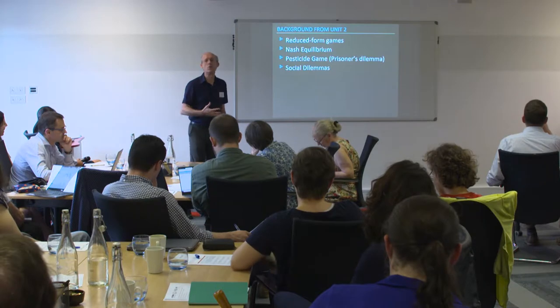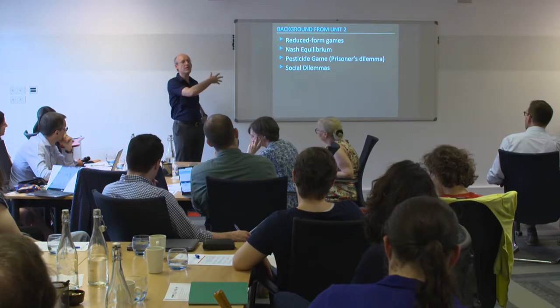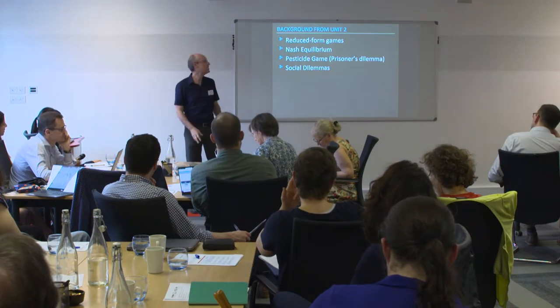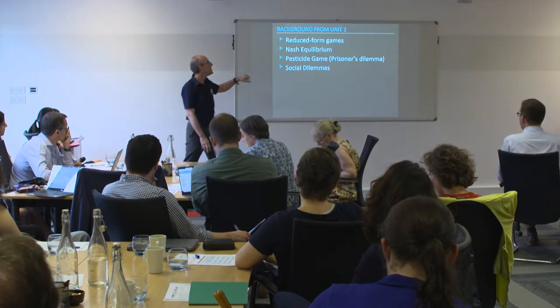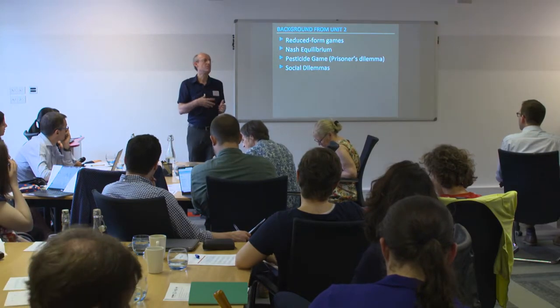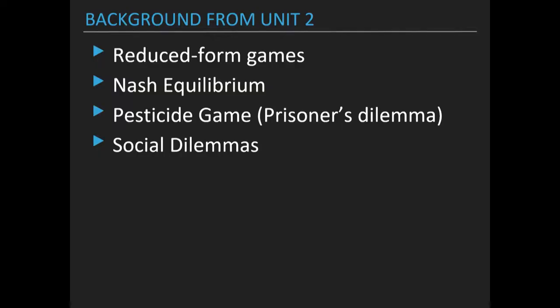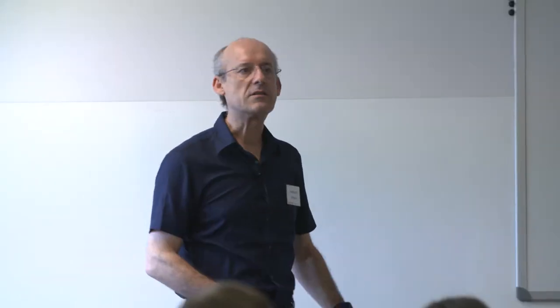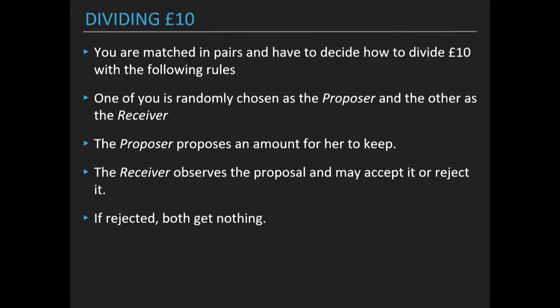This is chapter three, so we need to know where we are in the course. Students already have some background: they have learned about reduced form games, the concept of Nash equilibrium, and they have played a particular story behind the prisoner's dilemma — the pesticide game. They know the problem with social dilemmas and what happens when, rather than being an individual decision maker, we are in a society and we may end up with outcomes we don't want. So the way I like to start is: let's play a game.